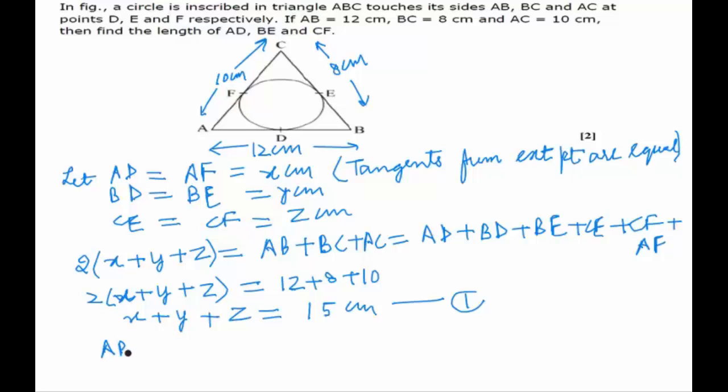AB which is equal to AD plus BD, which can be written as x plus y. So now from equations 1 and 2 we can easily find out z, which will be equal to CF, equal to the difference of the two equations, 15 minus 12, that is equal to 3 centimeters. So this is one of the values we were supposed to find in the question.